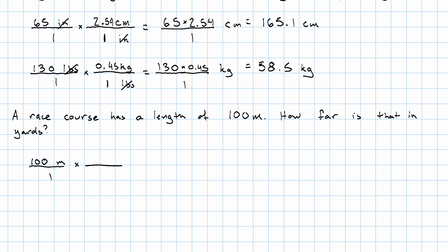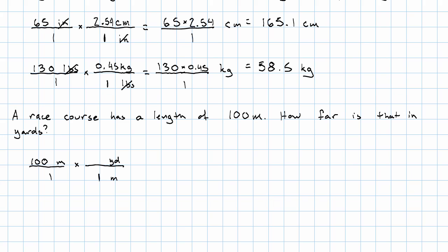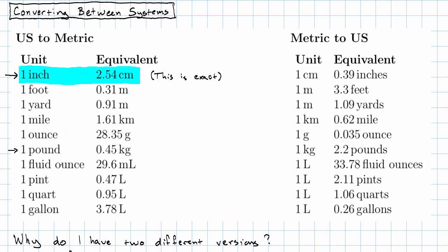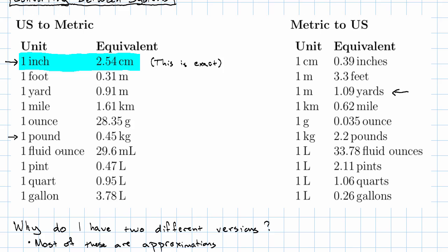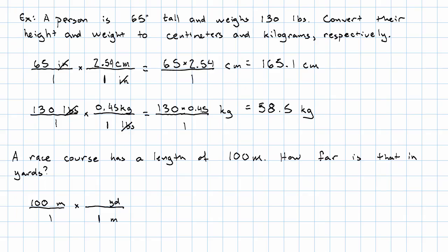And now I want a conversion factor that has meters in the denominator and yards in the numerator. But I want to choose this conversion factor so that the number in my denominator is 1. So I'll go to my table again and I'll look and I'll find 1 meter is 1.09 yards. So that means I have 1 meter in the denominator, 1.09 yards in the numerator.